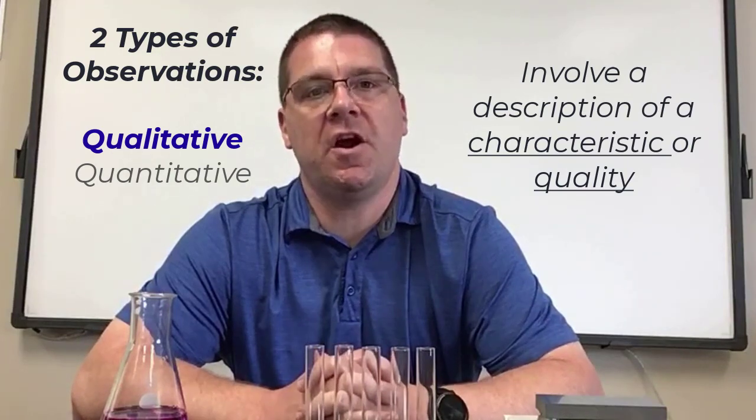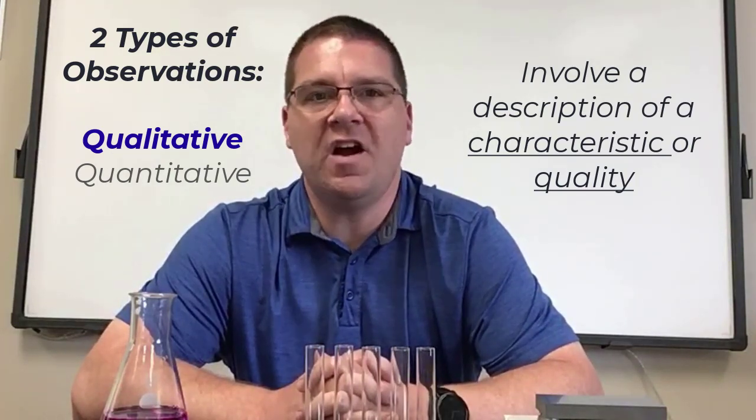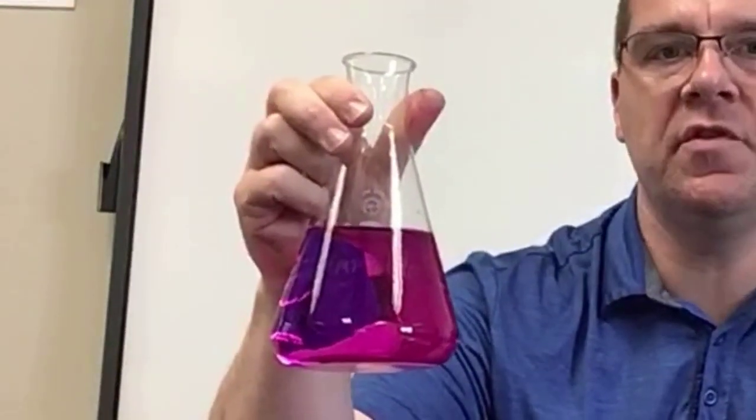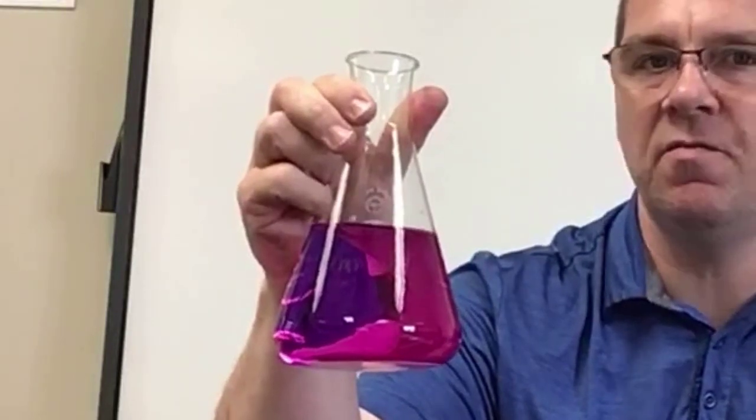Qualitative observations involve a description of a characteristic or quality that does not involve any sort of measurement. For instance, the solution in this flask is a deep pink. The description of the solution's shade or color does not involve a measurement — it refers simply to the presence of a particular characteristic or quality.